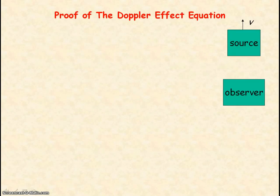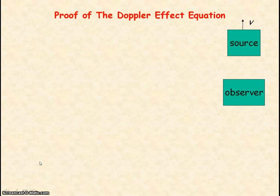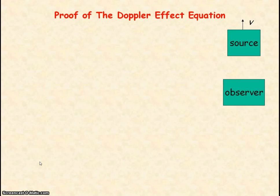I'm now going to go through the proof of the Doppler effect equation. It's not a proof you need to know, so it's for those who are interested. The Doppler effect equation for light requires using special relativity, which is way beyond the syllabus. So we're going to be proving the Doppler effect equation for sound, which can then be used as an approximation for light.